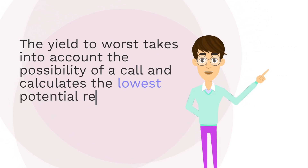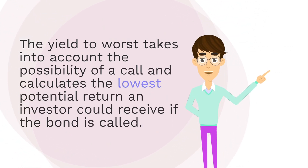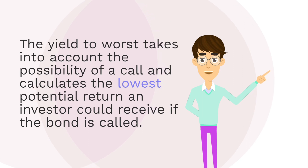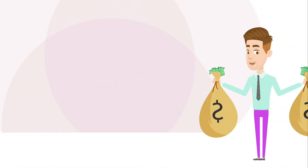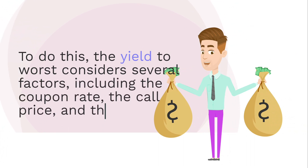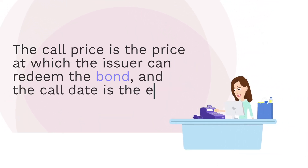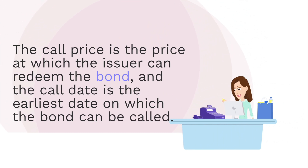This means the investor will receive a lower return than expected if the bond is called before maturity. The yield to worst takes into account the possibility of a call and calculates the lowest potential return an investor could receive. To do this, the yield to worst considers several factors, including the coupon rate, the call price, and the call date. The call price is the price at which the issuer can redeem the bond, and the call date is the earliest date on which the bond can be called.